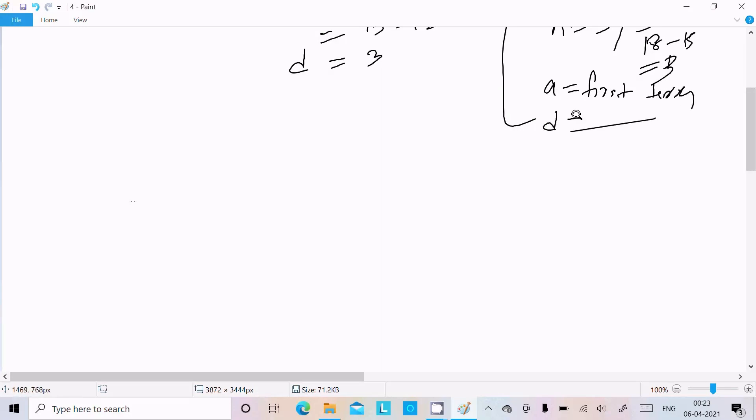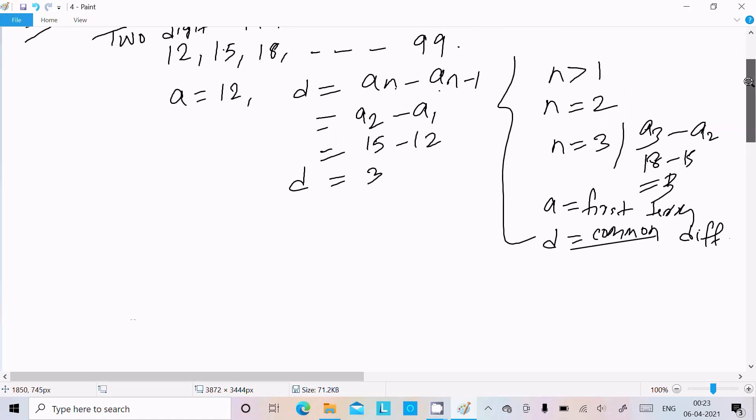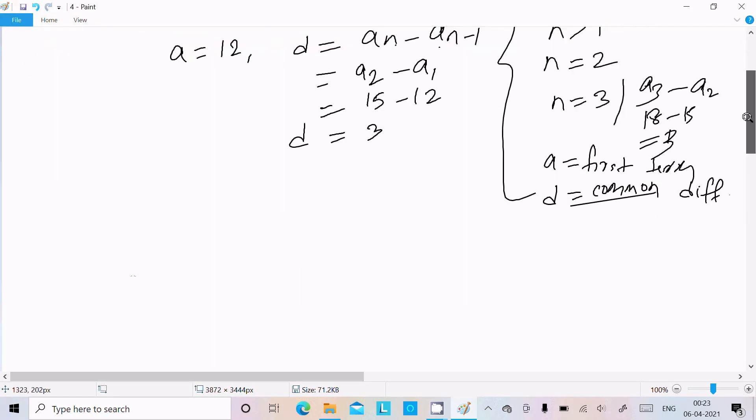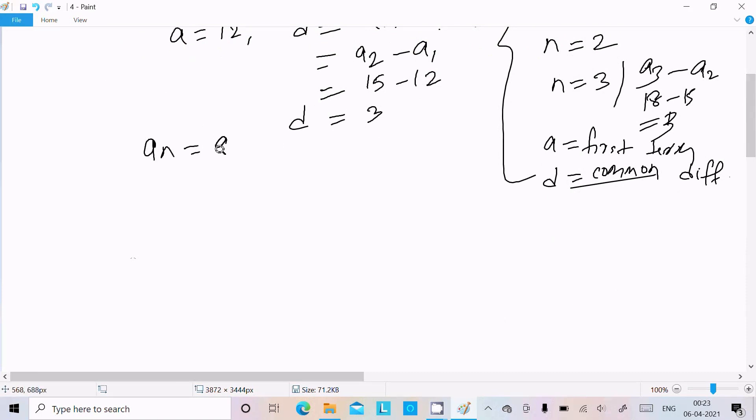Now in the bracket, write here a is the first term, d is the common difference. Now a and d we calculated. Thereafter, the last term is 99, so nth term is 99. We know the formula of nth term.